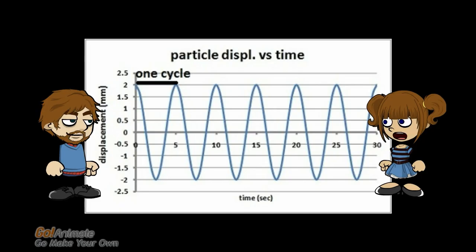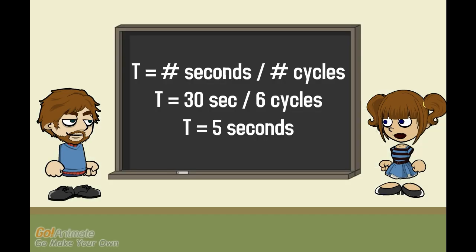So one cycle, or wave, is what it takes for the particle to come back to its starting position? Exactly. We can use this graph to determine how much time it takes to complete one cycle. You will remember from circular motion that this is called the period of motion. This graph shows six cycles and it takes 30 seconds to complete them. To find the period we want the time for one cycle, so we divide the time by the number of cycles: 30 seconds divided by six cycles gives us five seconds per cycle. This means the period is five seconds.